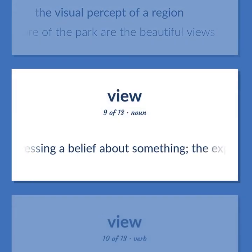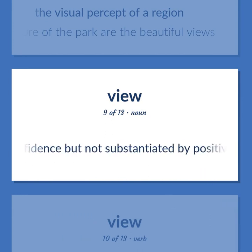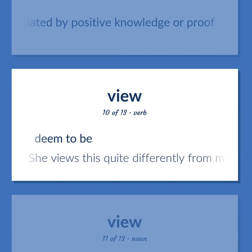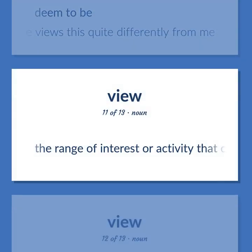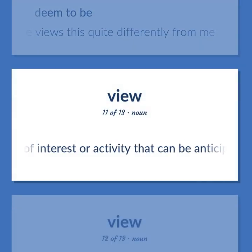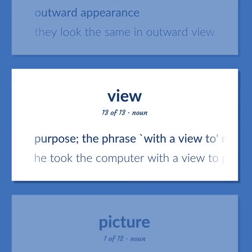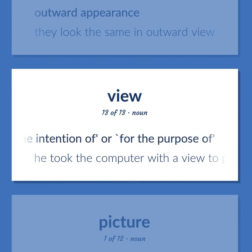View: A message expressing a belief about something; the expression of a belief held with confidence but not substantiated by positive knowledge or proof. Deemed to be — she views this quite differently from me. The range of interest or activity that can be anticipated. Outward appearance — they look the same in outward view. Purpose: the phrase 'with a view to' means 'with the intention of' or 'for the purpose of.' He took the computer with a view to pawning it.